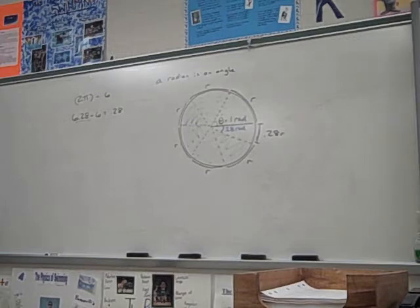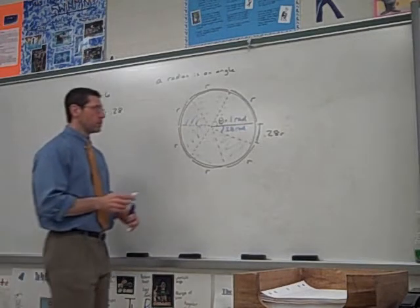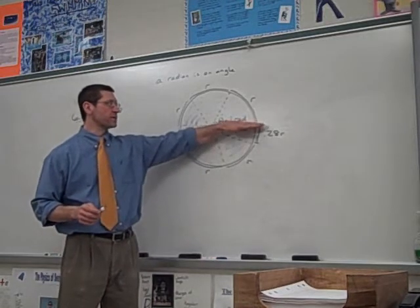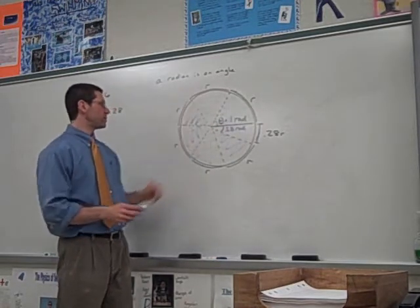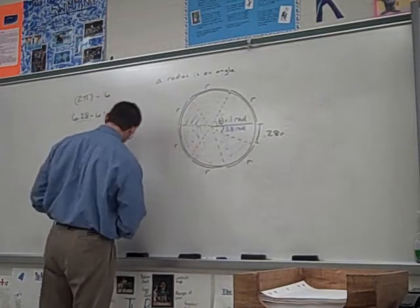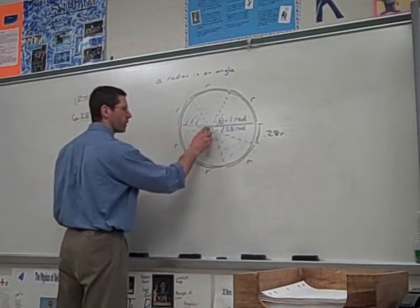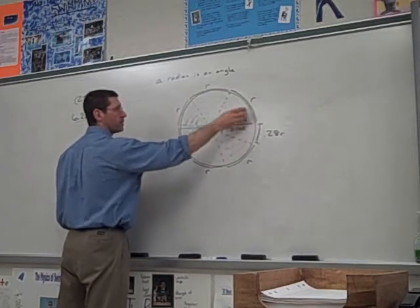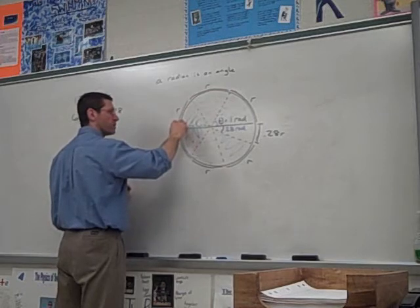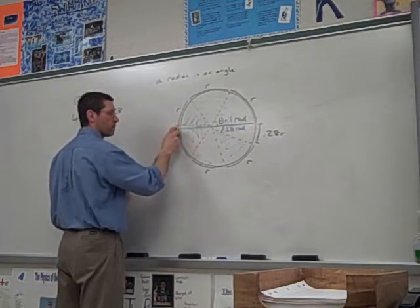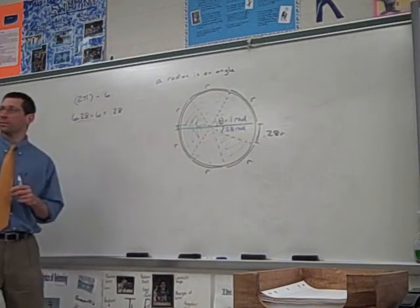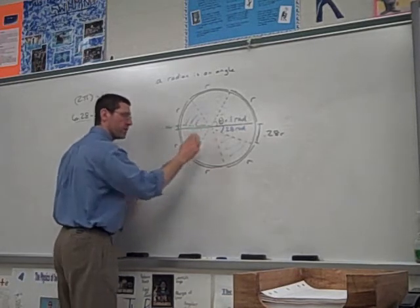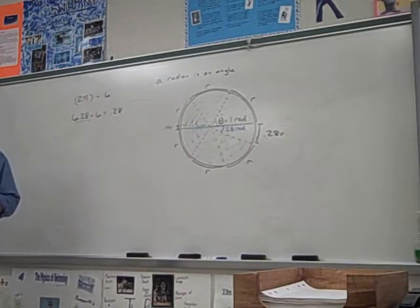Did everybody see that? So if I took my radius and I wrapped it around the circle to this point here. So I went from here to here. I would have 1, 2, 3. How much would that be there? Right. This would be 0.14 r, and the angle here would be 0.14 radians.